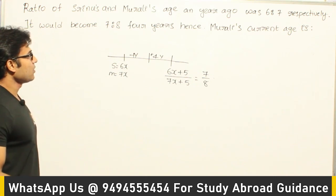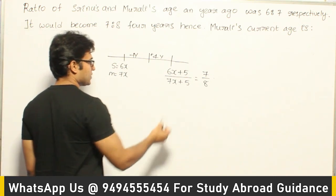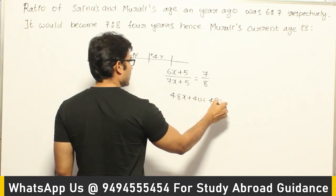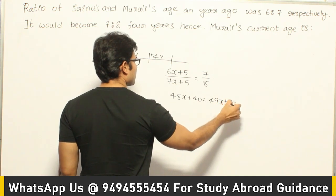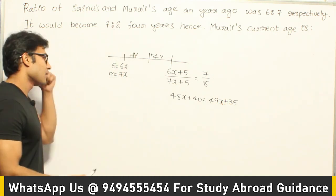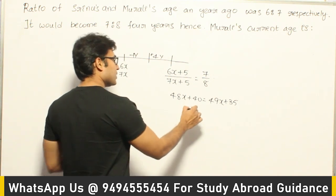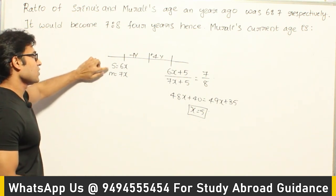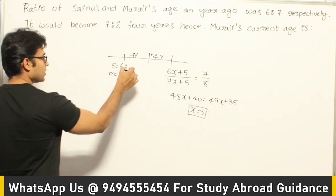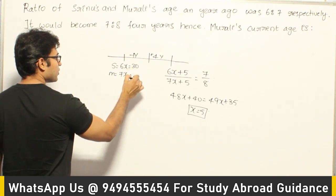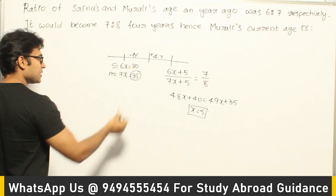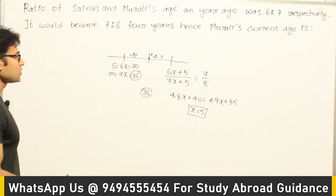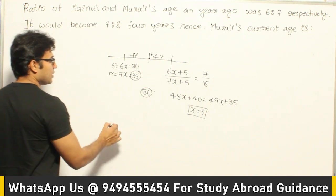Now solving for X: 8(6X + 5) = 7(7X + 5), which gives 48X + 40 = 49X + 35, so X = 5. Since X = 5, Srinu's age 1 year back is 30 and Murali's age 1 year back is 35. Therefore, Murali's present age is 36 years.